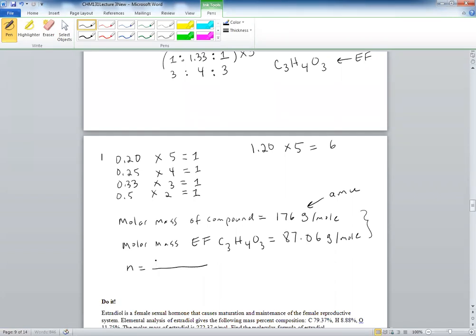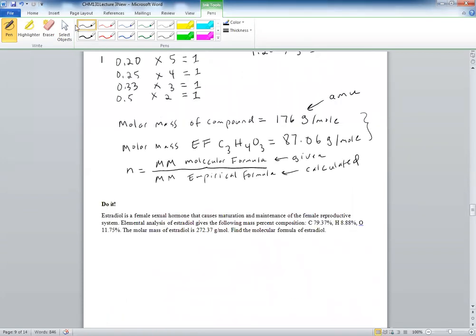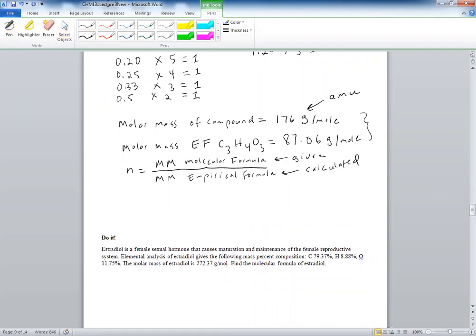You would take the molar mass of the molecular formula that was given to you—this number is given, you cannot just come up with it—divided by the molar mass of the empirical formula, and that would be calculated. So then that would be 176 grams per mole divided by 87.06 grams per mole. And since we need a multiple, an integer, that would give us 2.